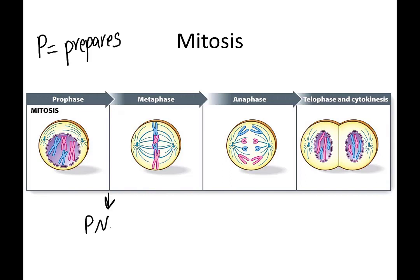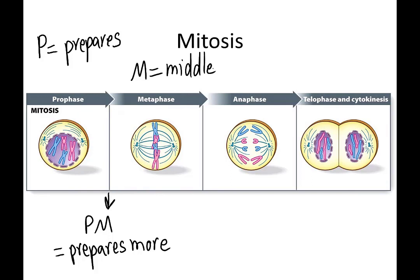The next stage is prometaphase. PM stands for 'prepares more' — the nuclear envelope breaks down, the microtubules begin attaching to the duplicated chromosomes, and the tug-of-war is just beginning. Metaphase starts with M, and it is during metaphase that the duplicated chromosomes line up in the middle of the cell. Anaphase starts with A, which stands for 'apart' — because during anaphase, the sister chromatids separate from each other and move apart.